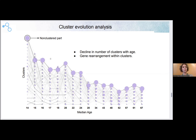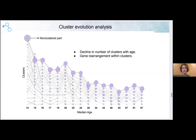What we identified is a decline in the number of clusters with age, and a huge level of gene rearrangement within these clusters. The arrows denote gene rearrangements between clusters, and the thicker the arrow, the bigger is the Jaccard index between the clusters. It is clearly seen that the non-clustered part is almost conserved among all ages.